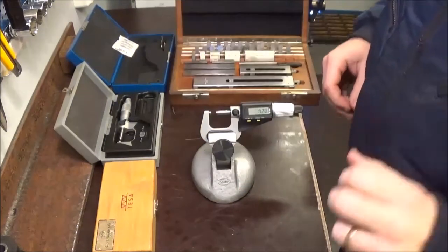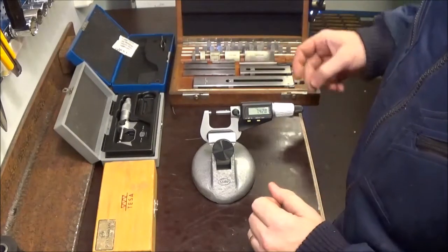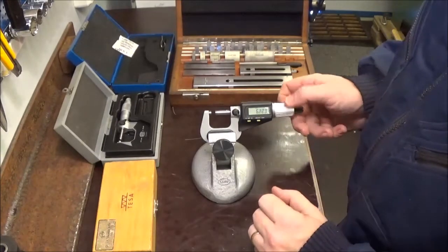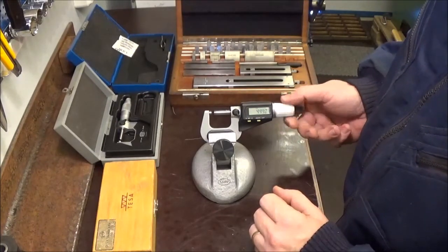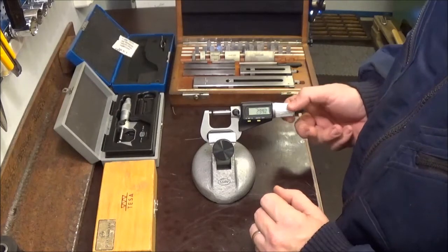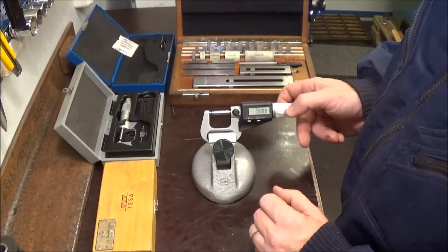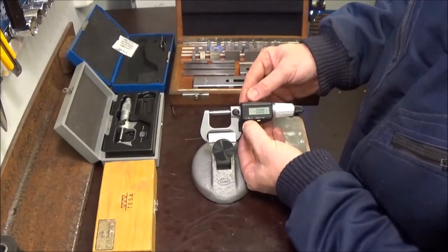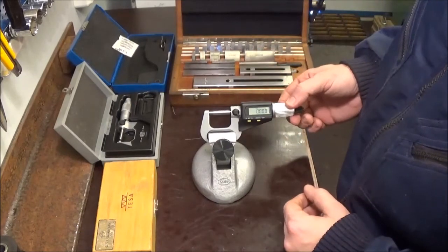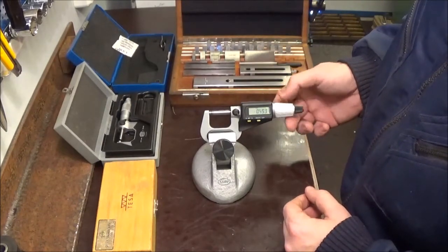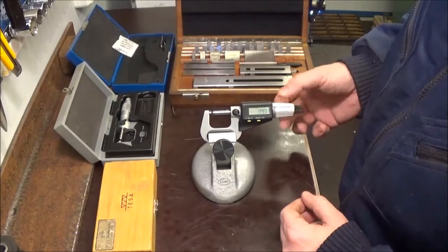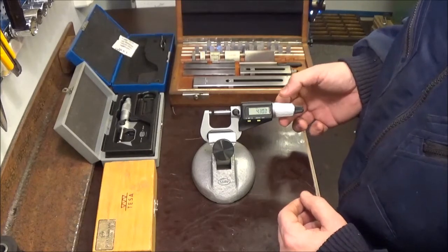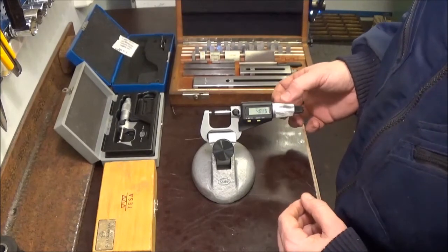Here we have a set of gauge blocks from the 1960s—Swedish made, from CJE, a fairly well-known company in Sweden. First, I'll zero this out. The jaws are fairly clean, but I'll give them another wipe down with that window washing liquid I've used in previous videos.